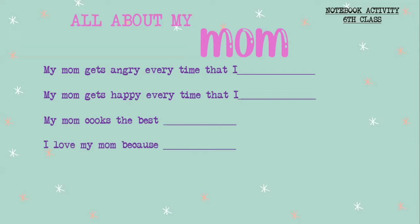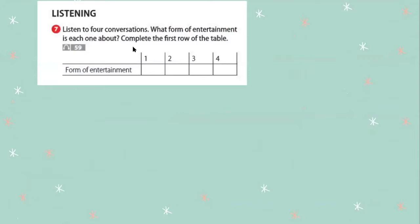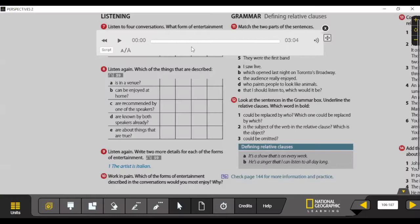If you haven't finished, pause the video, copy the sentences and answer them. I really hope you know all the answers — if you don't, go spend some time with your mom after class. Now let's get to work on our classwork. Open your student book on pages 106 and 107. The first exercise is a listening: listen to four conversations — what form of entertainment is each one about? Complete the first row of the table with the correct form of entertainment. Let's listen.